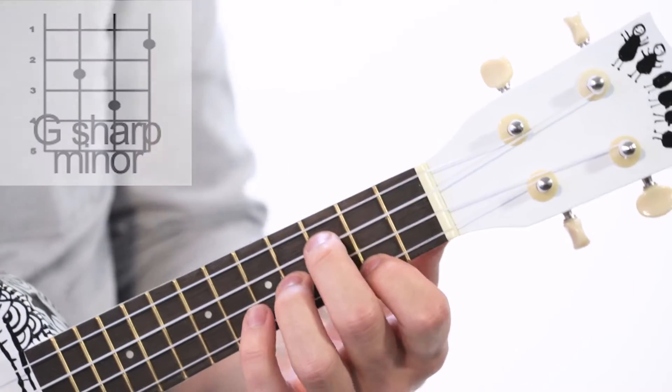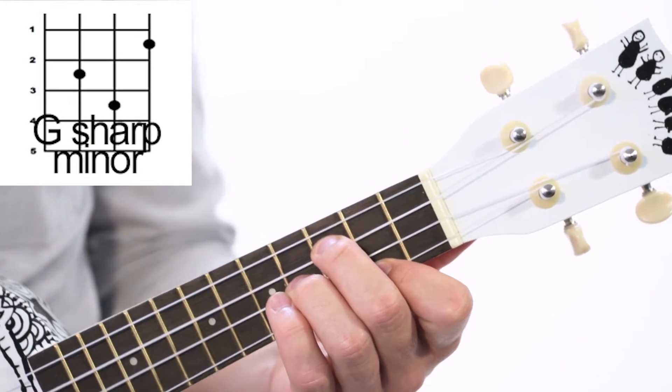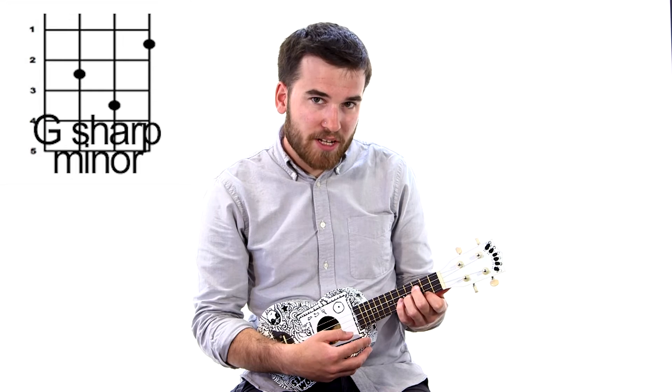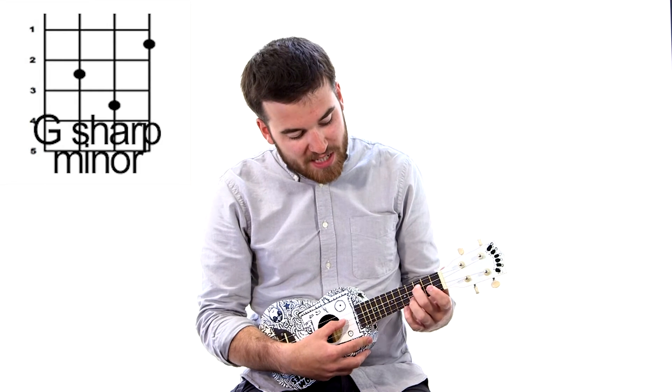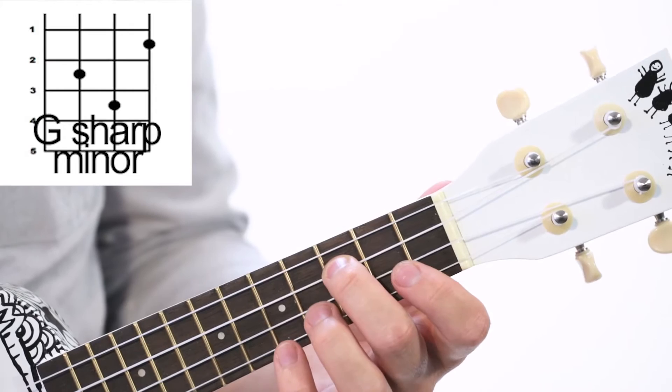Okay, so the first chord we're going to be learning for this song is G sharp. It's quite a tricky chord to play. We're going to be doing second finger on the third fret, third string.